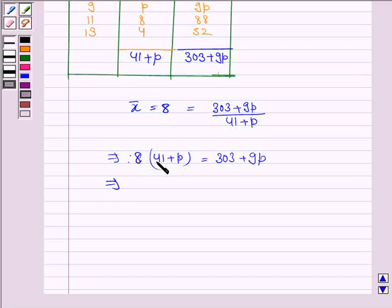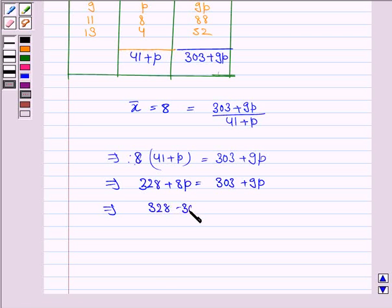Now, 8 times 41 is 328, plus 8 times p is 8p, equals 303 plus 9p. So this implies 328 minus 303 equals 9p minus 8p.